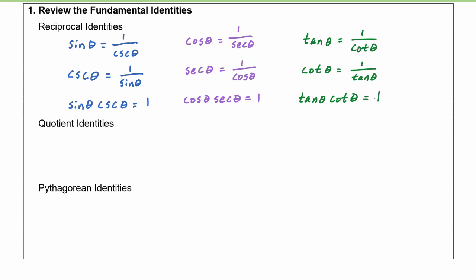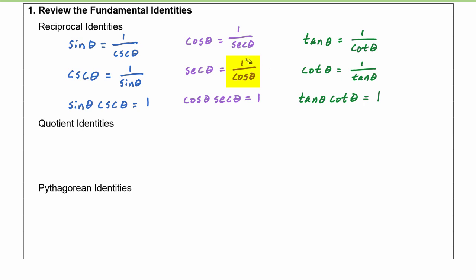Now remember what all these identities mean: when two expressions are equal to each other, that means they can be substituted for each other anywhere. So anywhere I see a one over cosecant theta, I can trade it for a sine theta. Any time I see one over cosine theta, I can trade it for a secant theta. And that's going to be the power of using the identities in this chapter.